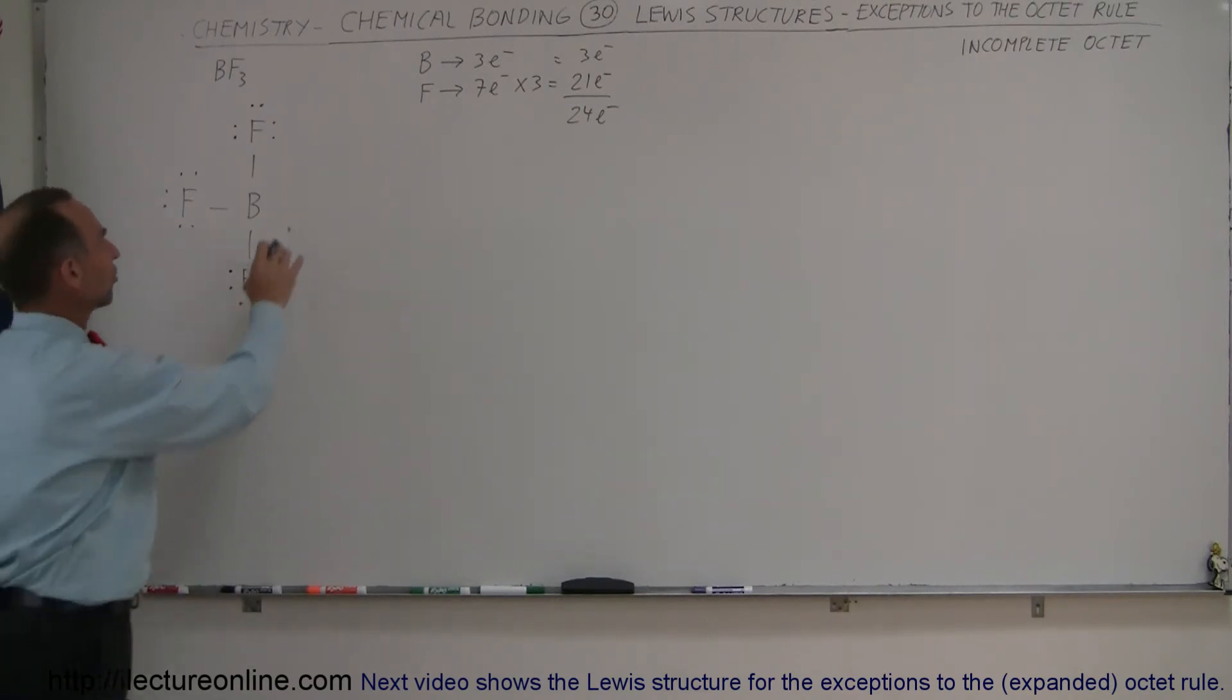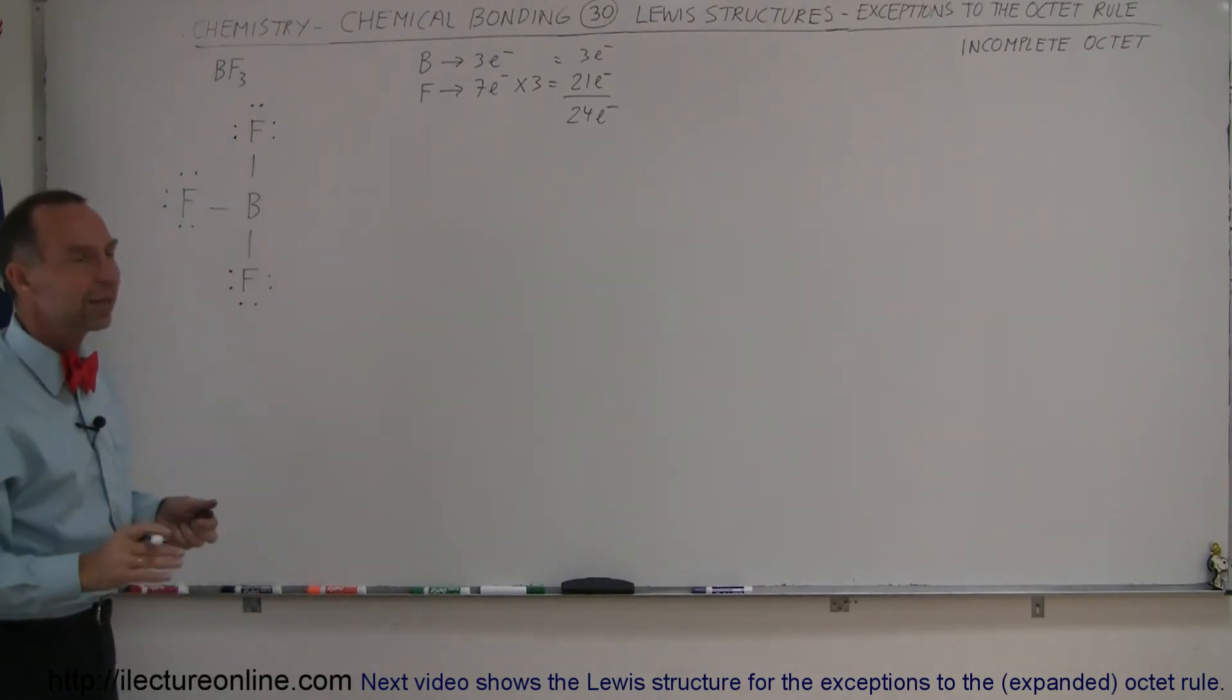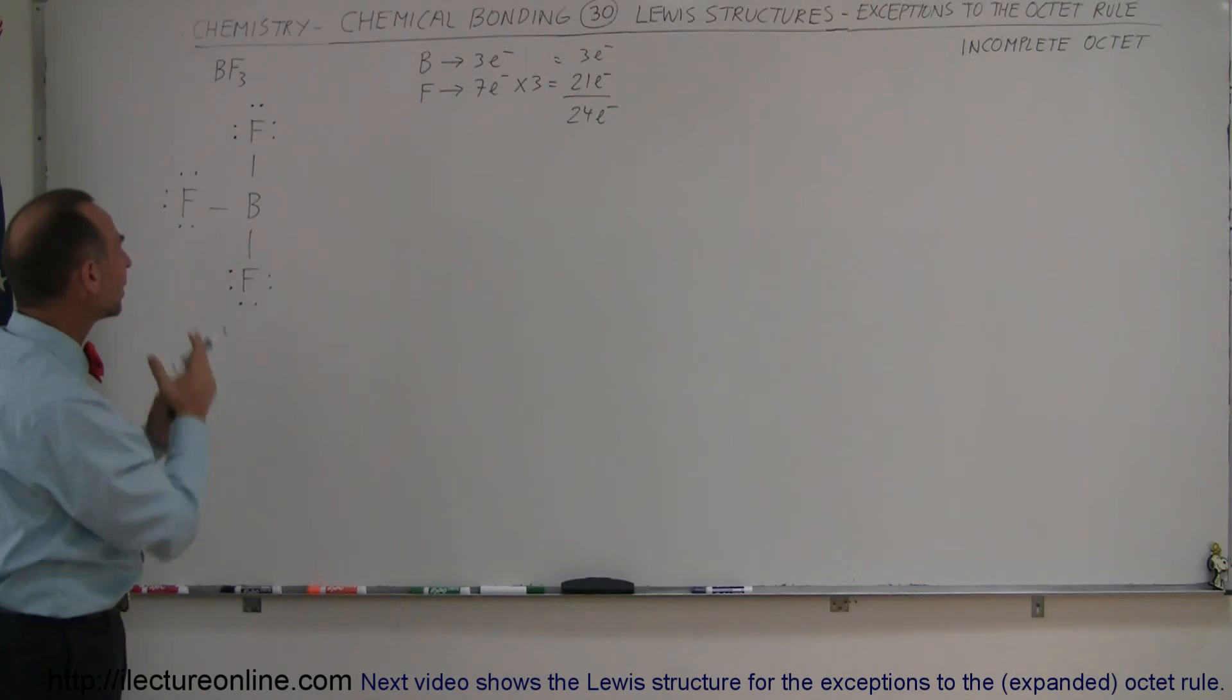However, because of this extra space, what happens sometimes is that another atom or molecule comes in and bonds with the boron. For example, ammonia.